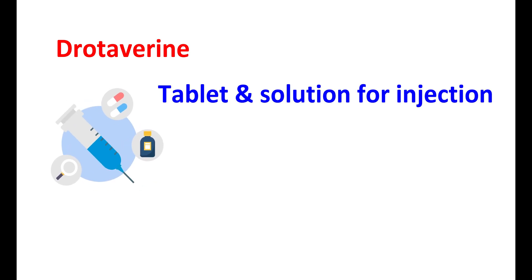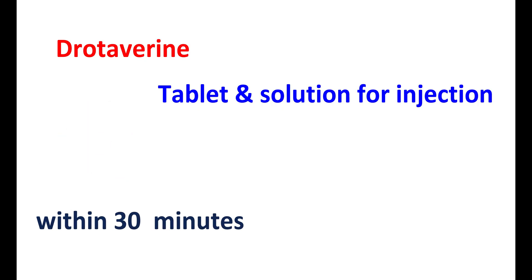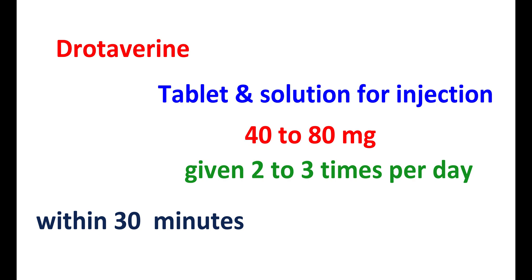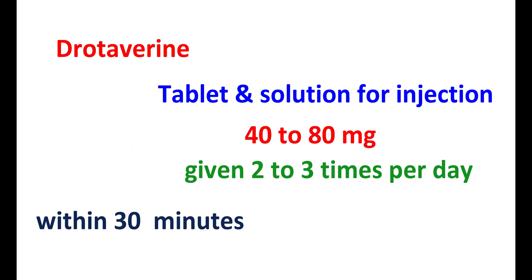Now let us see the dosage of this medication. Drotavarine is available as a tablet as well as a solution for injection. As a tablet, it is available at a strength of 40 mg and when given by oral route, it is rapidly absorbed and shows a fast onset of action within 30 minutes. When given by intravenous route, it can produce quick relief of muscle spasm. For treating muscle spasm and relieving pain, this medication can be given at a dose of 40 to 80 mg, given 2 to 3 times per day. When given by intravenous or intramuscular route, it is given at a dose of 40 to 80 mg. In children under 1 year, this medication is not recommended; in children above 1 year, the dose is fixed based on body weight and severity of the condition.